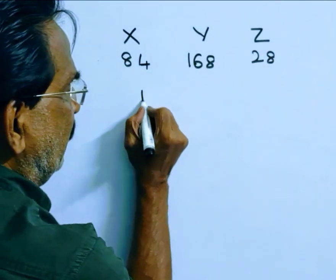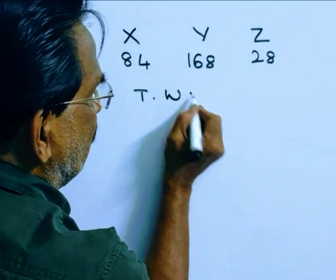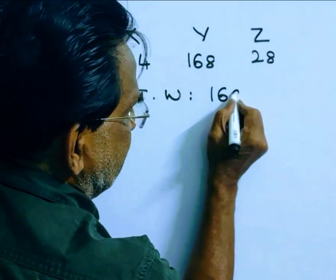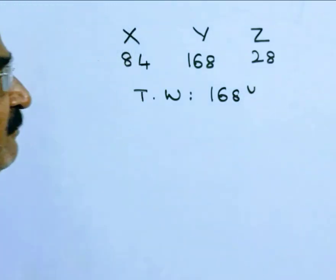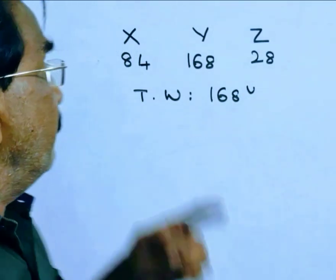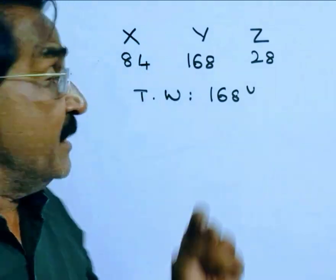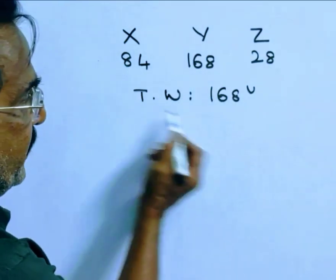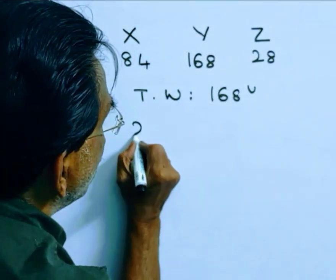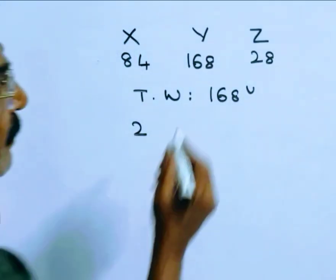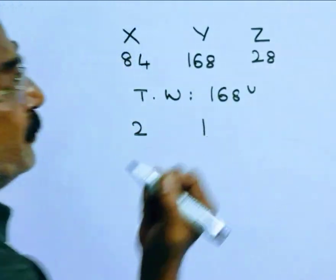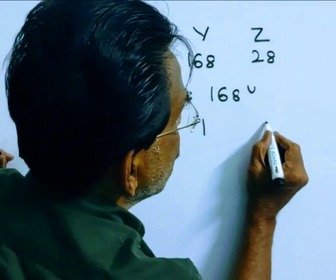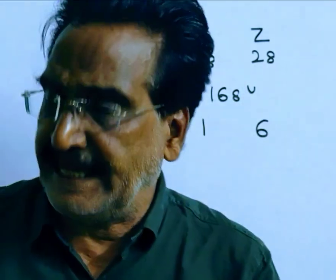Now the total work. LCM of 84, 168, and 28 is 168. So the total work is 168 units. X can complete the work in 84 days. The total work is 168 units. 84 times 2 is 168. So X can do 2 units of work per day. 168 once, Y can do 1 unit of work per day. 28 times 6 is 168. So Z can do 6 units of work per day.